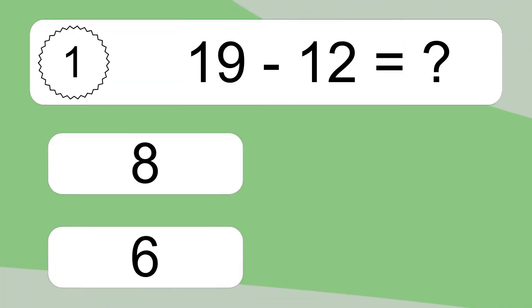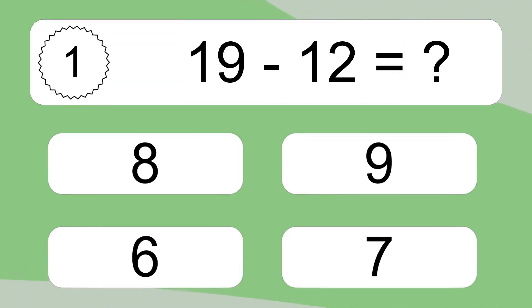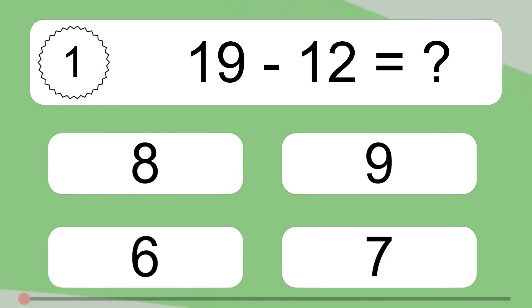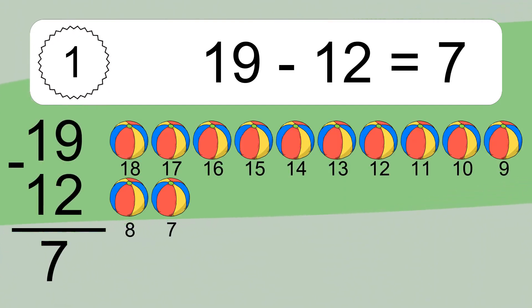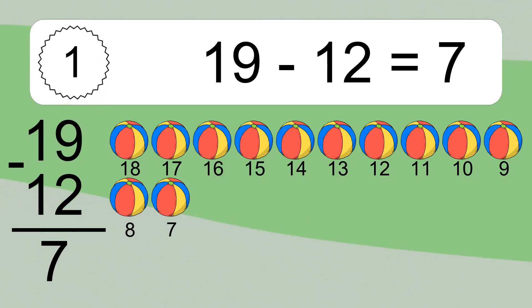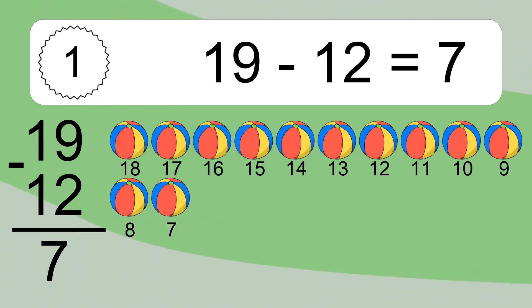19 minus 12 equals what? 19 minus 12 equals 7. Let's count it: 18, 17, 16, 15, 14, 13, 12, 11, 10, 9, 8, 7.